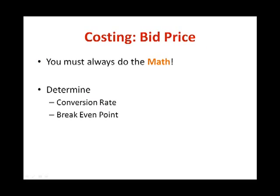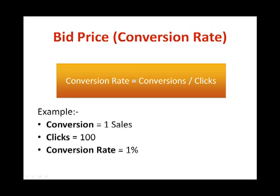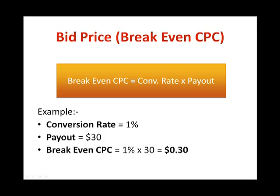When determining your bid price, it is important to always do the math. The two key variables are your conversion rate and break-even CPC. To calculate your conversion rate, the formula is: number of conversions divided by number of clicks. For example, if one person purchases out of 100 clicks, your conversion rate is 1%. To calculate your break-even CPC, multiply conversion rate by payout. So with a 1% conversion rate and a $30 commission payout, the break-even CPC is 1% × $30 = $0.30. This means you can afford to pay up to $0.30 per click — keep your CPC below $0.30 to profit, above $0.30 and you'll incur losses.